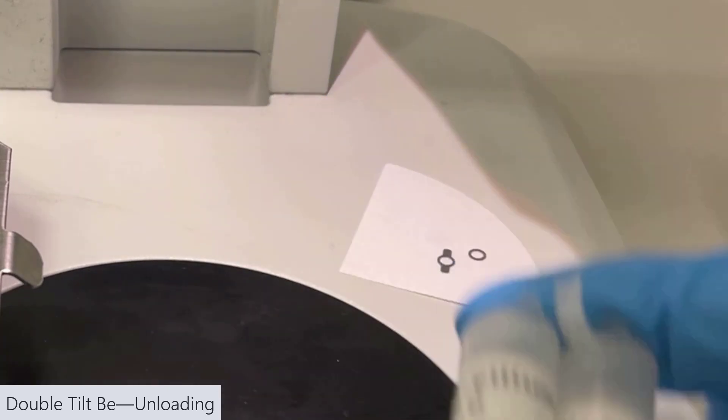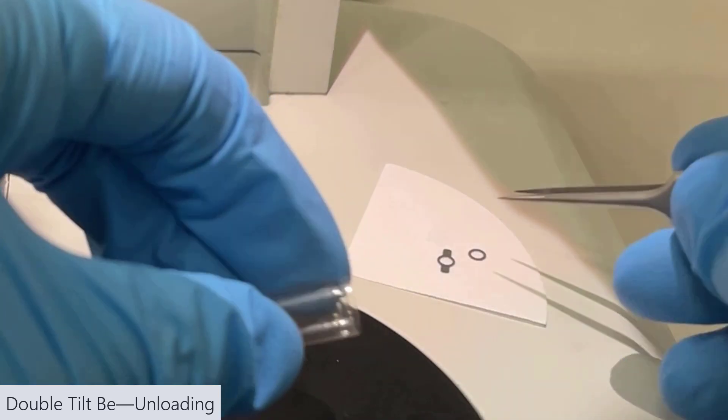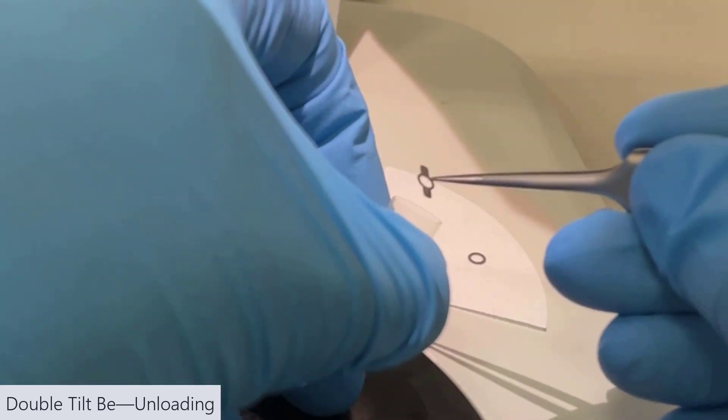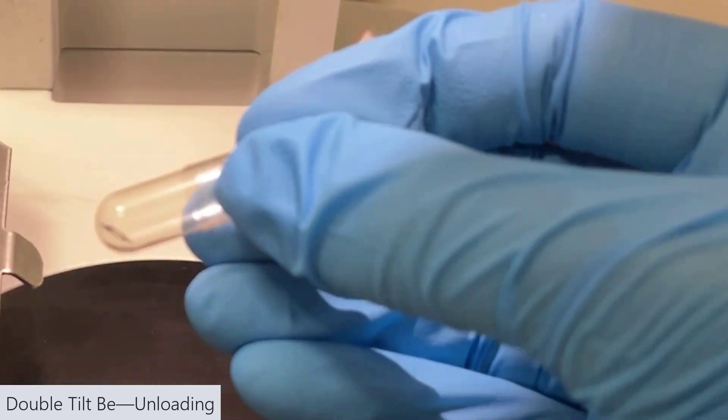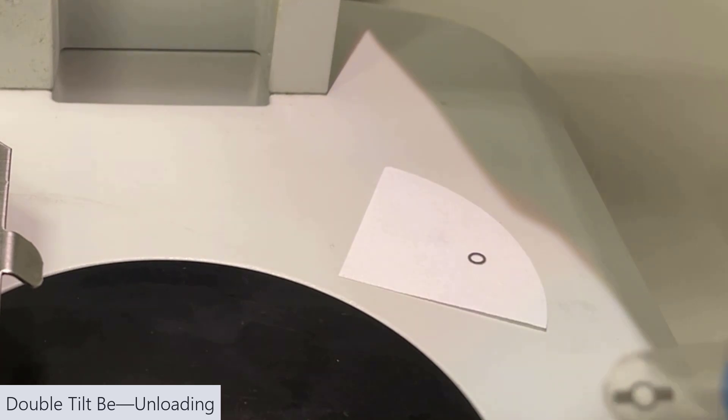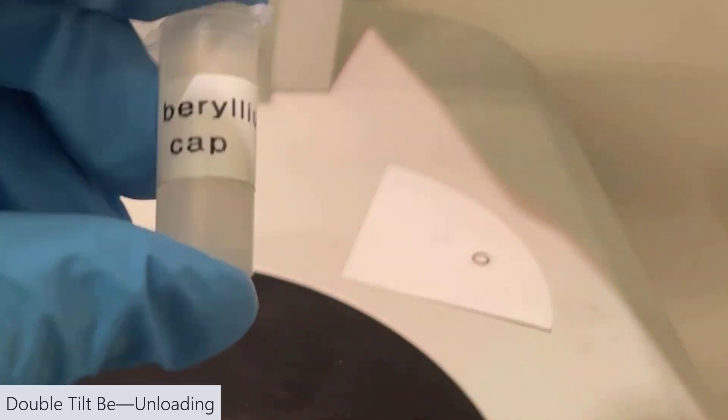For our lab, we actually keep the beryllium spacer and cap in these little gelatin capsules. That way, we don't risk them falling out in a vacuum pump that we use to keep our sample rod in at all times. So I'm just putting the beryllium cap back in its little gelatin capsule and then its container and then the beryllium spacer as well.